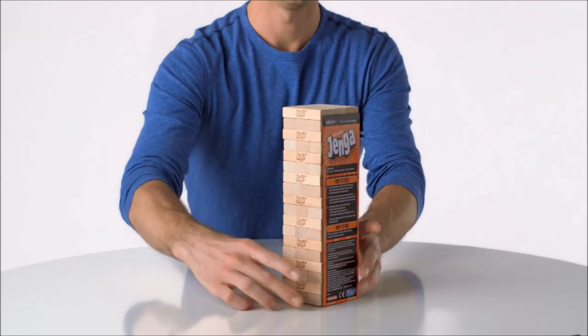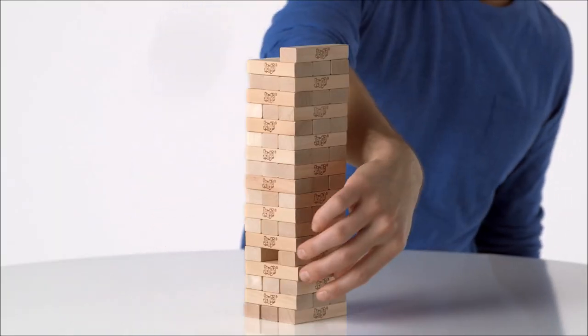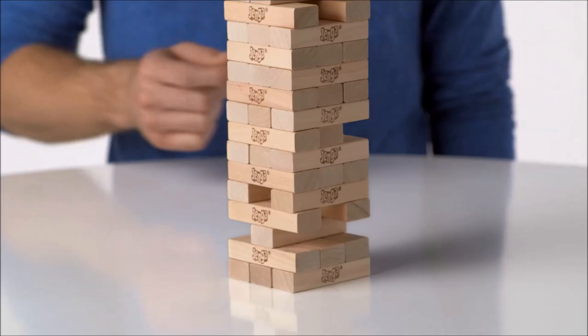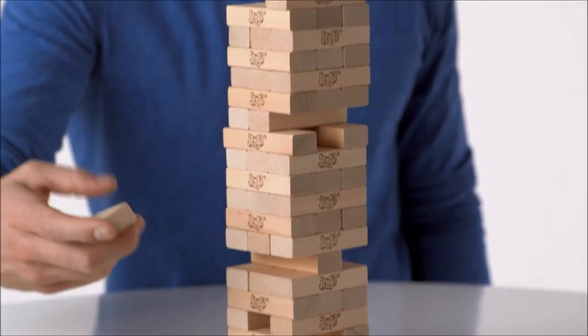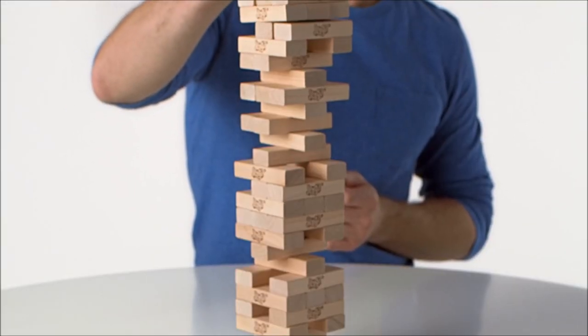Use the stacking sleeve to build the tower, and using only one hand, carefully remove a block from anywhere beneath the highest completed level and then stack it on top. Keep taking turns stacking blocks as the tower starts to rock back and forth. Just don't knock it over.